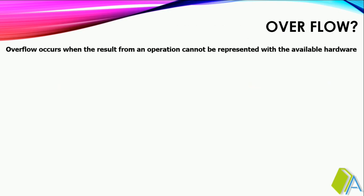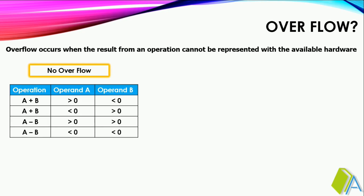What do we mean by overflow? Overflow occurs when the result from an operation cannot be represented with the available hardware. For example, in MIPS 32 architecture, all registers are 32-bit size, and if you want to do any addition and subtraction, in the worst case they may result in a 33-bit result. At that time the available hardware may not be sufficient for representing that result, so we can conclude that there is an overflow.